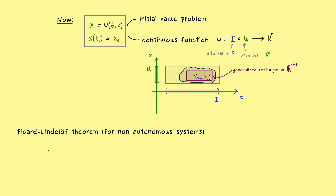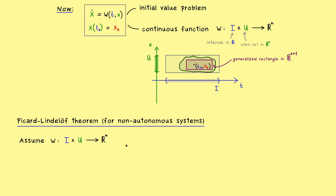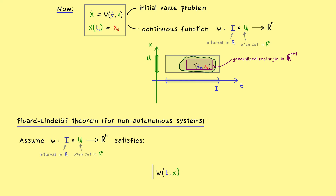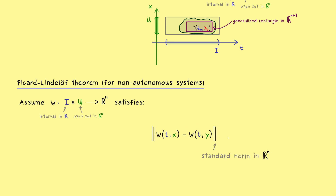We are now ready to state the Picard-Lindelöf theorem for non-autonomous systems. We have a function w on a domain in Rⁿ⁺¹, and it should satisfy a local Lipschitz condition — similar to the original theorem, but only in the second argument. The Lipschitz condition says: the norm of w(t,x) minus w(t,y) should be less than or equal to a constant L times the norm of x minus y. So we have a parameter t involved, but t is the same on both sides.